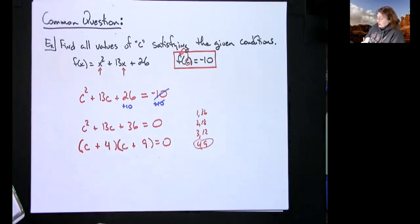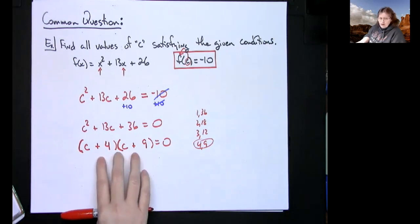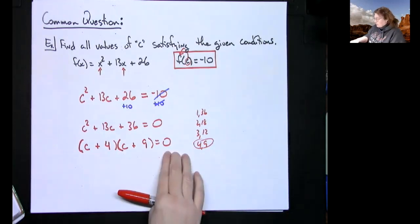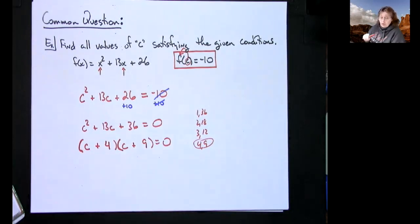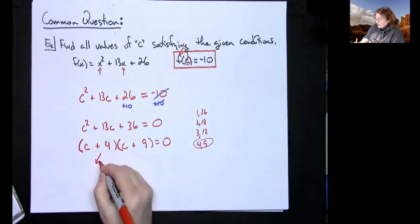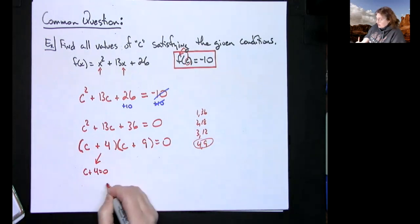So a 9 and a 4, and everything is plus signs. Now zero product principle - we've done this a lot. Two binomials multiplied together set equal to zero, I can set this equal to zero and solve for c. c equals negative 4. Set the second binomial equal to zero, subtract nine from both sides, c equals negative 9.